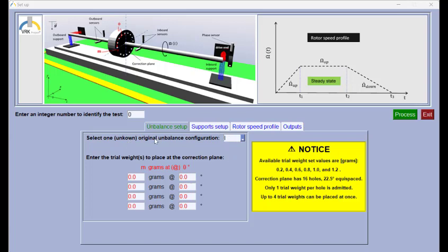This number represents the unbalance configuration. Currently, there are up to five possible unknown unbalance configurations. They are named 1 in Roman numbers 2, 3, 4, and none.